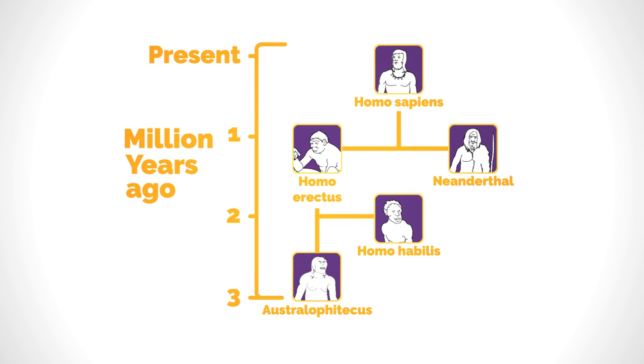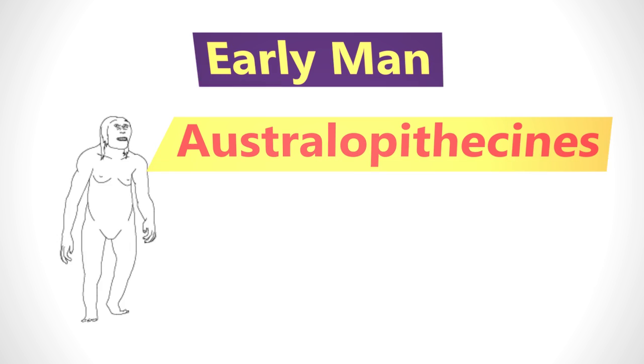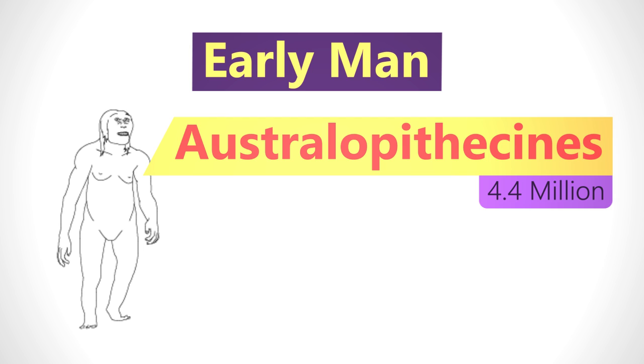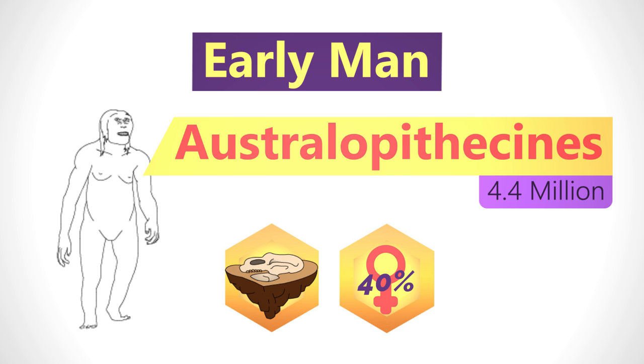The human lineage diverged from apes at least seven million years ago, but it may be as long as 13 million years ago. The Australopithecines are the earliest undisputed members of our lineage to walk upright. We have bone fossils to support this. Most famously is Lucy, from which we have 40% of a female hominin skeleton. She dates back to 3.2 million years ago.